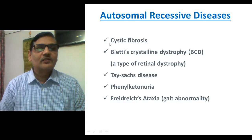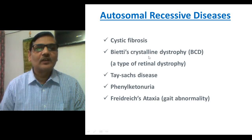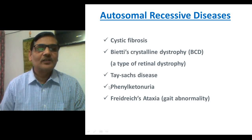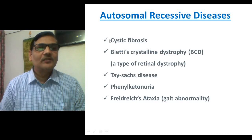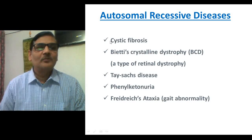Some of the diseases listed here include the genes causing cystic fibrosis, Best vitelliform macular dystrophy (BCD), which is a type of retinal dystrophy, and Tay-Sachs disease. The mutant genes resulting in such diseases are found on the autosomes. An individual suffers from these diseases only when the mutant allele is found in double copy — that is, both the maternal and paternal chromosomes carry the mutant allele — and only then is it expressed.